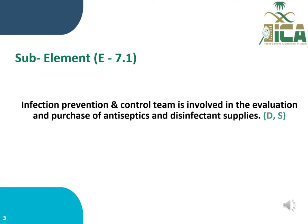Sub-element E7.1 is related to the Infection Prevention and Control Team being involved in the evaluation and purchasing of antiseptic and disinfectant supplies. This sub-element will be evaluated using two methods: document review and staff interview.